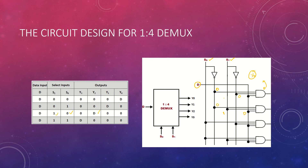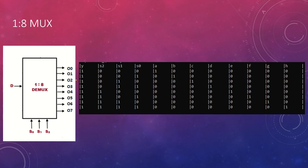For the next case where S0 is 1 and S1 is 0, the output should be Y1. When both S0 and S1 are 1, the output is Y3. So D gets routed to one of these four outputs based on the select lines. That's very simple and easy to understand.